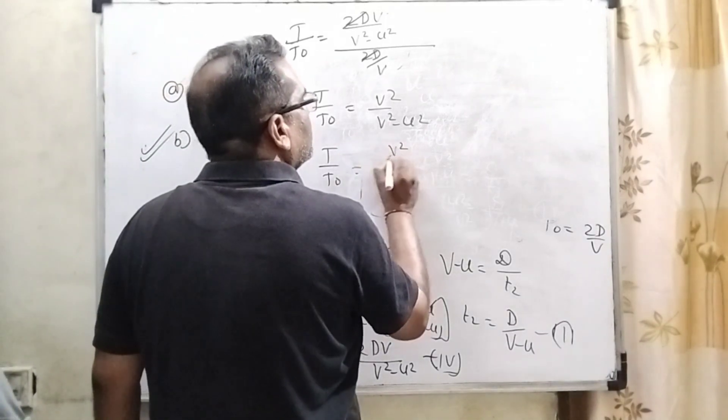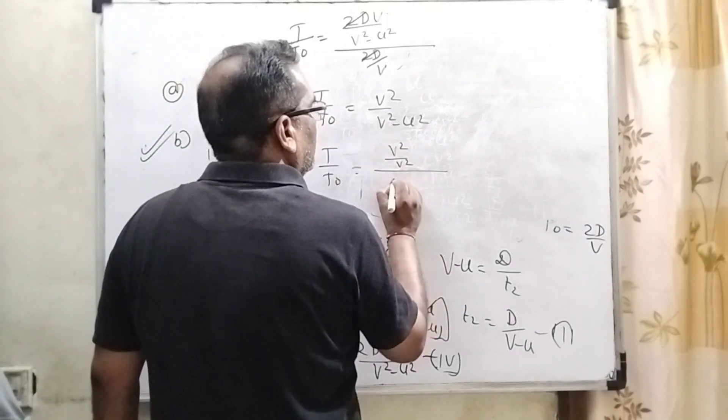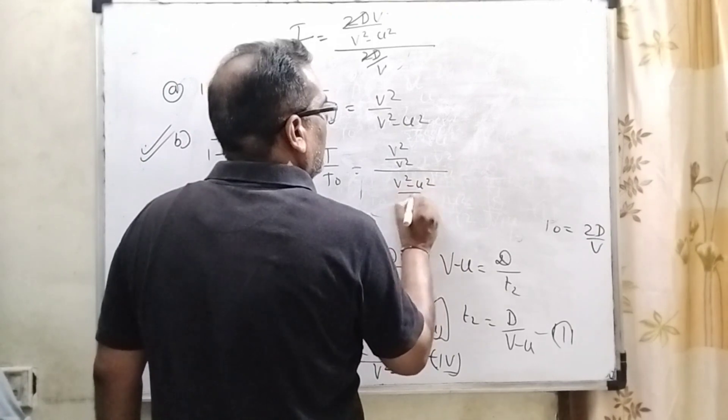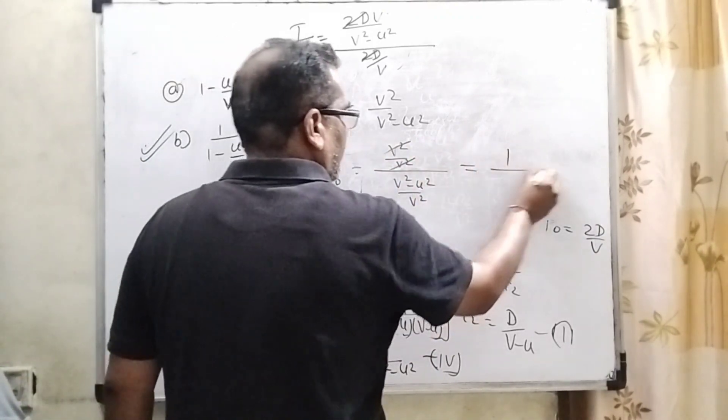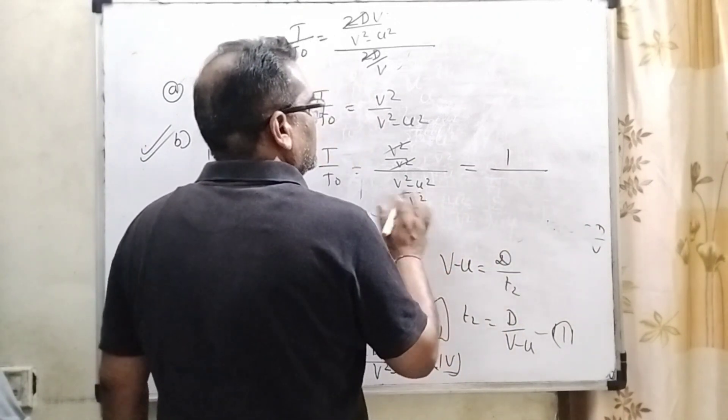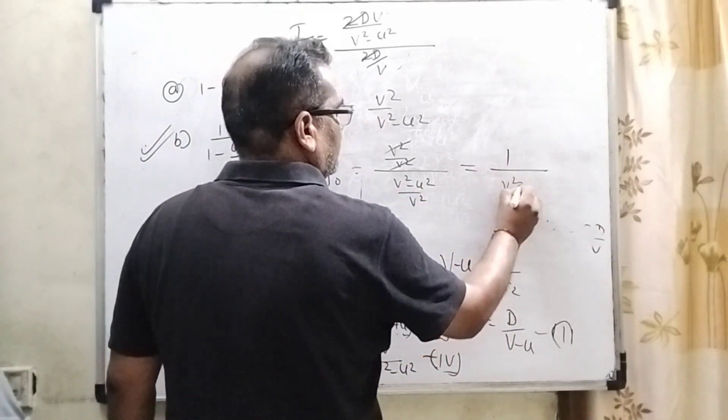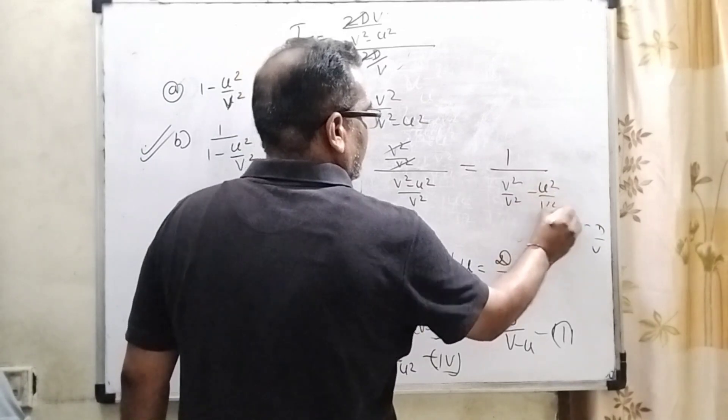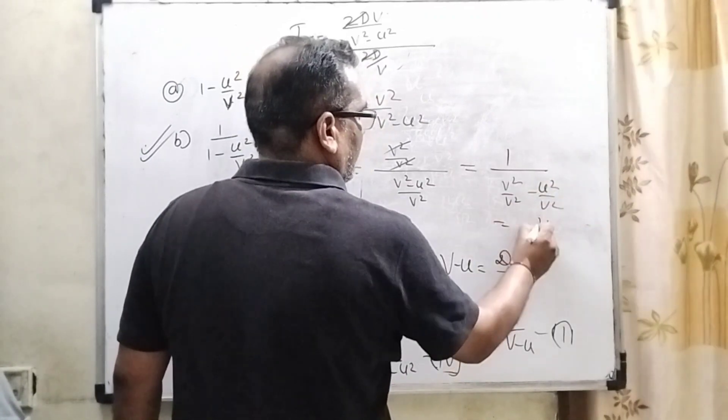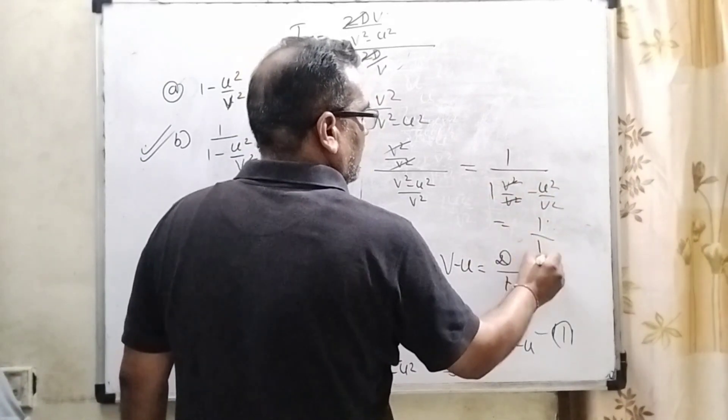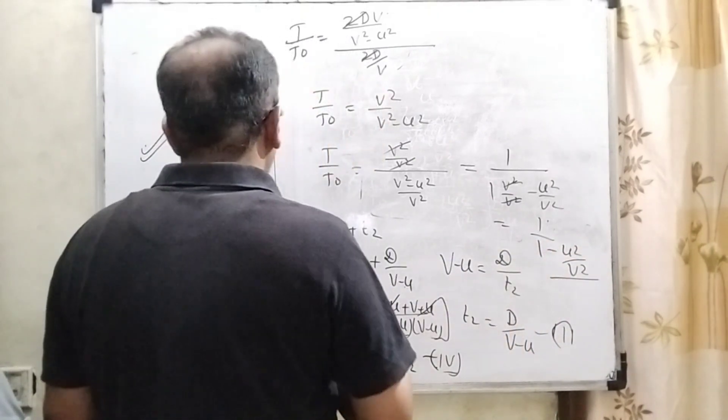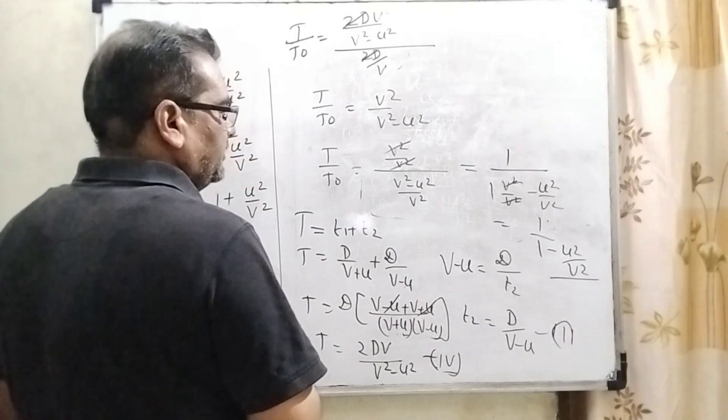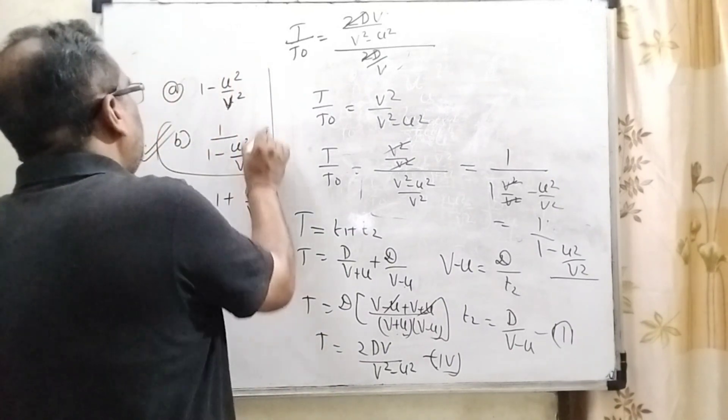So here V square upon V square, V square minus U square upon V square. Now it becomes V square, V square cancel out. Now it becomes 1. V square cancel out. 1 minus U square upon V square. So here which option is correct? Here option B is correct.